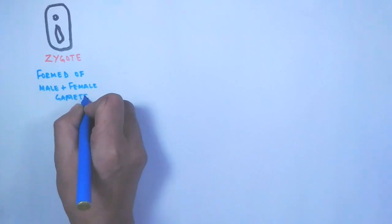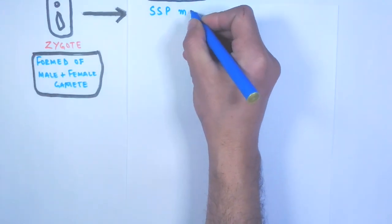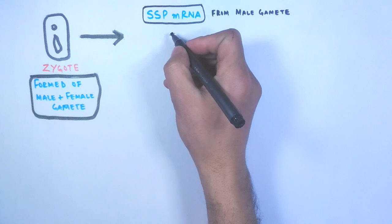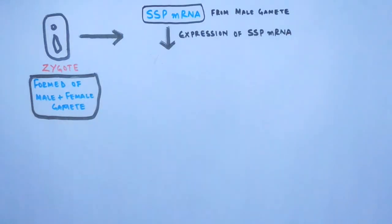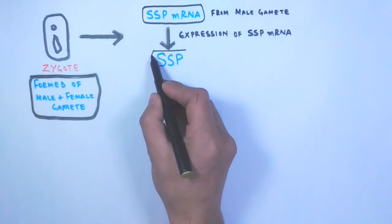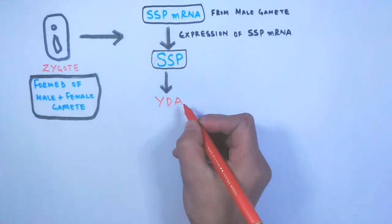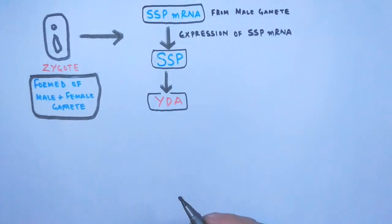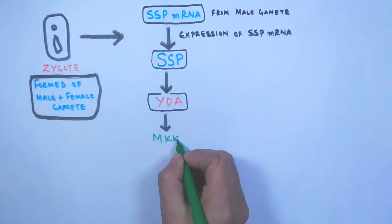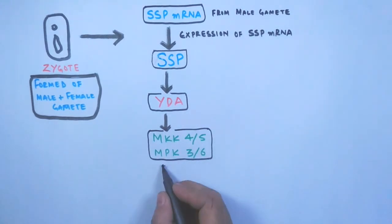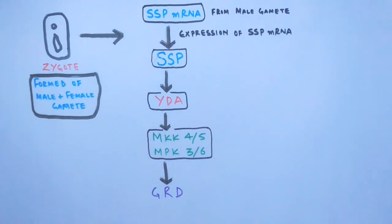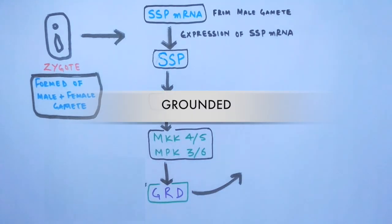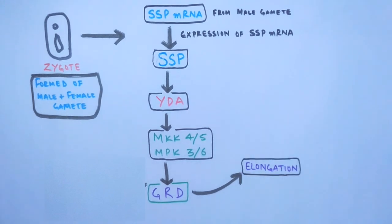We have the zygote which is formed from the male and female gametophyte. Within the zygote, the sspmRNA delivered from the male gametophyte shows expression and transcribes SSP protein. This SSP protein initiates the YODA pathway, the mitogen-activated protein kinase kinase pathway. The YODA pathway activates MKK45 and MPK36 proteins. These factors in turn activate GRD (grounded), and this grounded has a role to play in elongation of the zygote which ultimately leads to asymmetric division in the developing embryo.